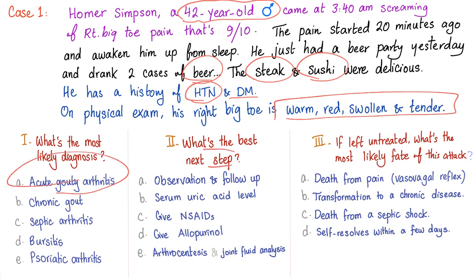What's the next step? Always aspirate the joint. Why? Number one, to rule out septic arthritis, which is infection. And number two, to diagnose the gout. Why should we rule out septic arthritis? Because it's a freaking emergency. And one of the management modalities for gout is to give intra-articular steroids or systemic steroids.